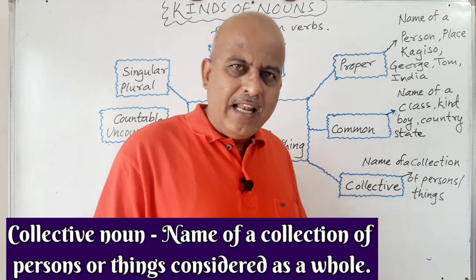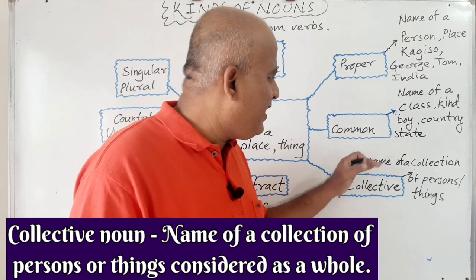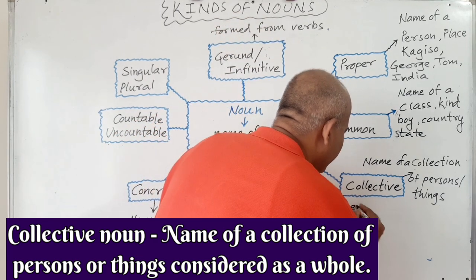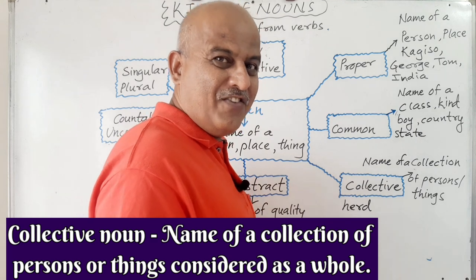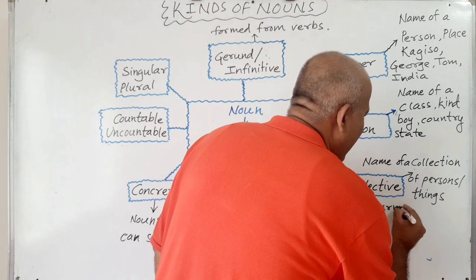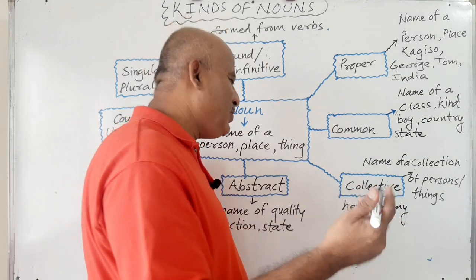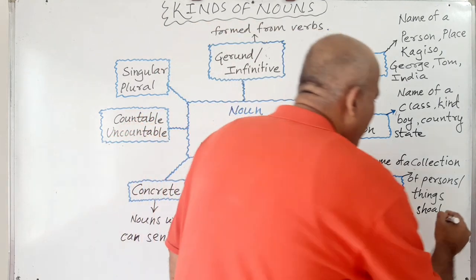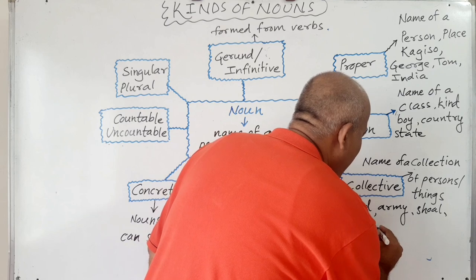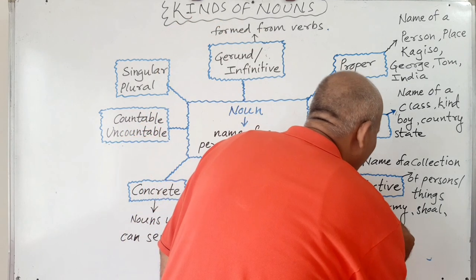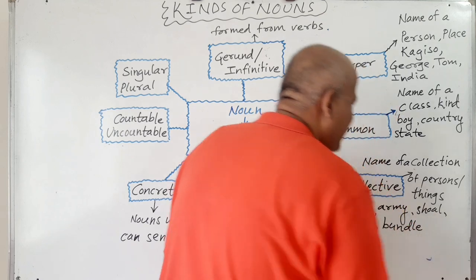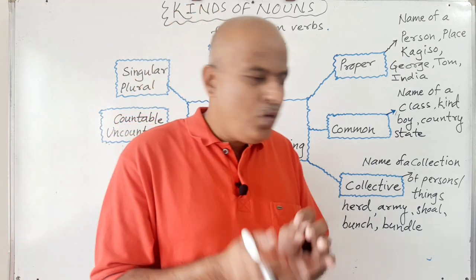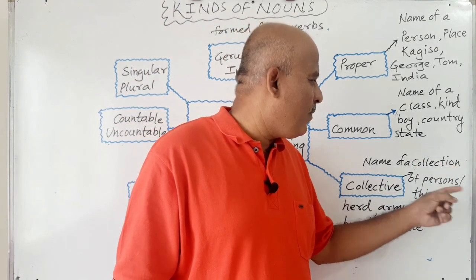Collective noun is a name given to a collection of persons or things. For example, herd — herd of cattle. Army — army of ants or army of soldiers. Shoal — shoal of fish. Bunch — bunch of keys, bunch of flowers. Bundle — bundle of currency notes, bundle of sticks. These are the collective nouns which show a group or collection of persons or things.